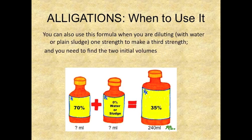You can also use this formula when you are diluting with water or plain saline — one strength to make a third strength — and you need to find the two initial volumes. So the key thing to remember with allegations is you will use this formula when they are asking you to find the two initial volumes. But for dilutions, when you are diluting with water or plain saline, you can also use allegations.